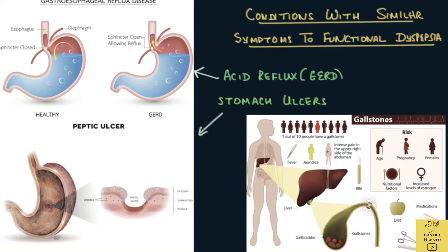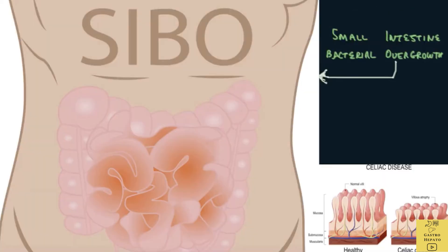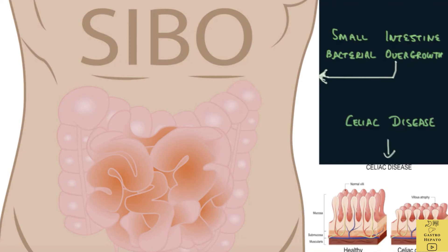Other similar conditions include ulcers in the stomach and first part of the small intestine, called peptic ulcers, and gallstones or stones in the gallbladder. Excess bacteria in the small intestine, called small intestine bacterial overgrowth, can follow the use of antibiotics or drugs that suppress stomach acid production like proton pump inhibitors — for example, omeprazole. Allergy to gluten, called celiac disease, where gluten is found in wheat, barley, and rye, is rare in Asia except in those with Indo-Caucasian heritage.